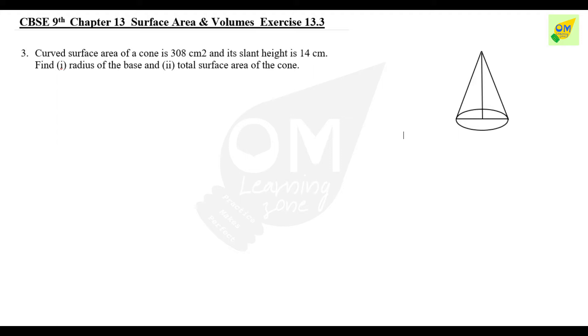There are two subdivisions: first subdivision is the radius, and the second subdivision is the total surface area of the cone.